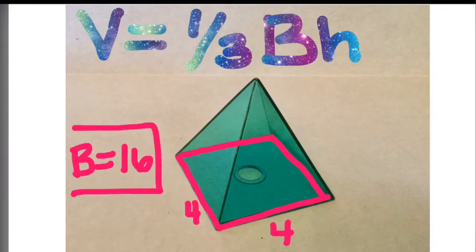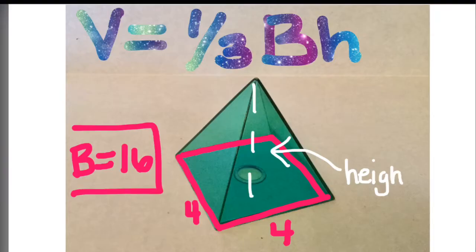Then we look for that height, which is located from the peak to the bottom. It's in the middle, not on the sides. And that is the height or how tall the 3D shape is. In this case, the height is 3.